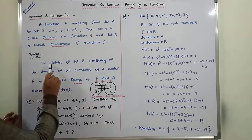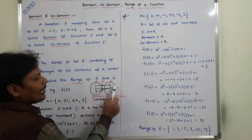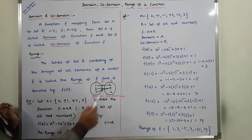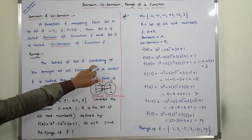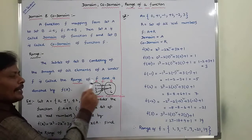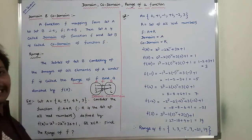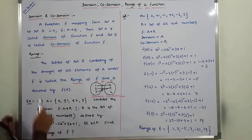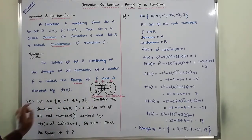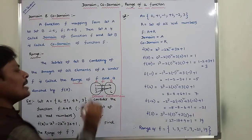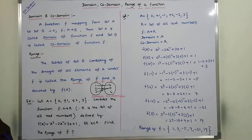Now for range: the subset of set B consisting of images of all the elements of A is called the range of F, denoted by F(A). Here, all the elements of A have images only 4 and 5 in set B, so {4, 5} is the subset. Domain = set A, co-domain = set B, and range = {4, 5}.